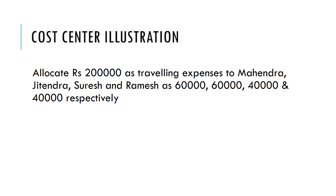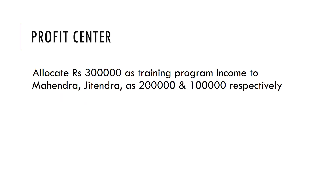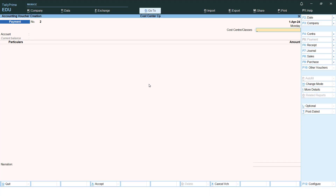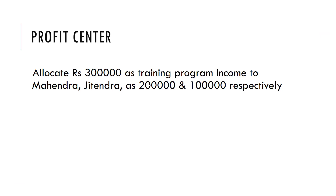The first illustration is done. Now let's go to the next topic — profit centers. The same four people — Mahindra, Jitendra, Suresh, and Prakash — will be considered profit centers if they are the reason for some revenue. The transaction says: allocate three lakh rupees as training program income to Mahindra and Jitendra as two lakhs and one lakh respectively. We don't need to change the cost centers, just pass a receipt voucher.